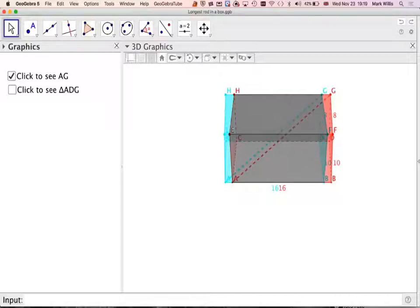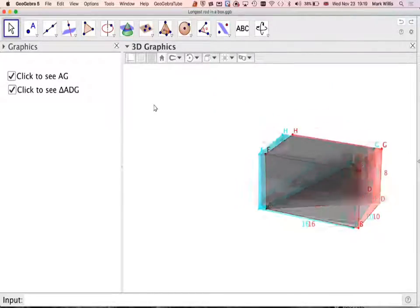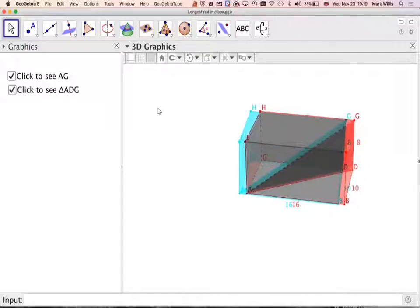And if we click on AG, this is what we need to find here. And then if we click on here, we find the triangle. And we can look at that from different angles if we wanted to using the GeoAlgebra app.